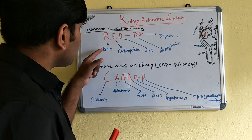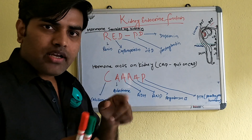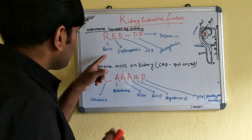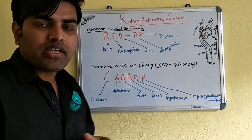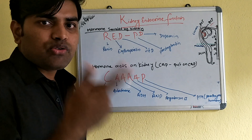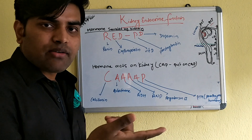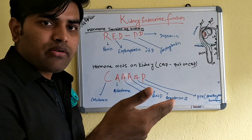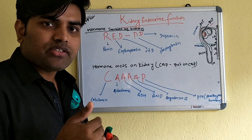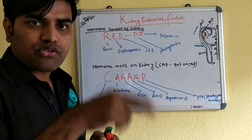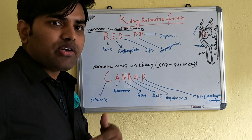Renin is secreted via the renin-angiotensin-aldosterone mechanism. There are three stimuli responsible for renin secretion. The first is decreasing blood pressure, which is sensed by the JG cells — the juxtaglomerular cells — which act as baroreceptors. Decreased BP stimulates these baroreceptors and causes JG cells to release renin.